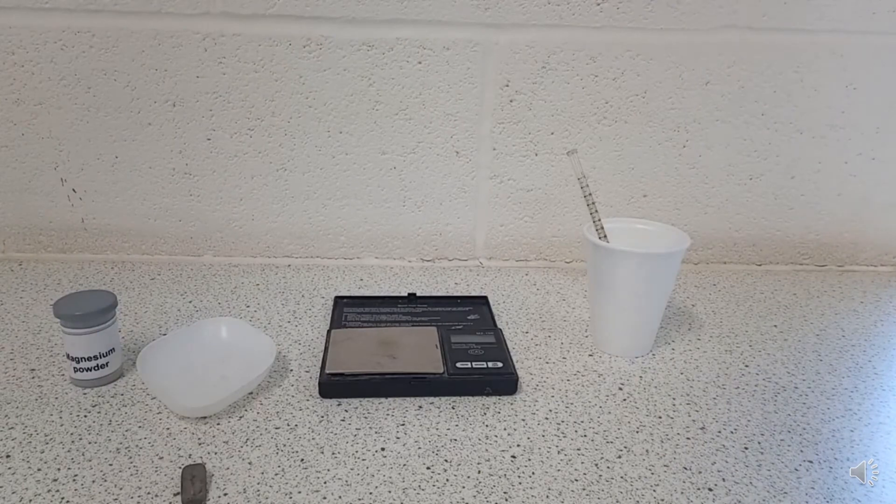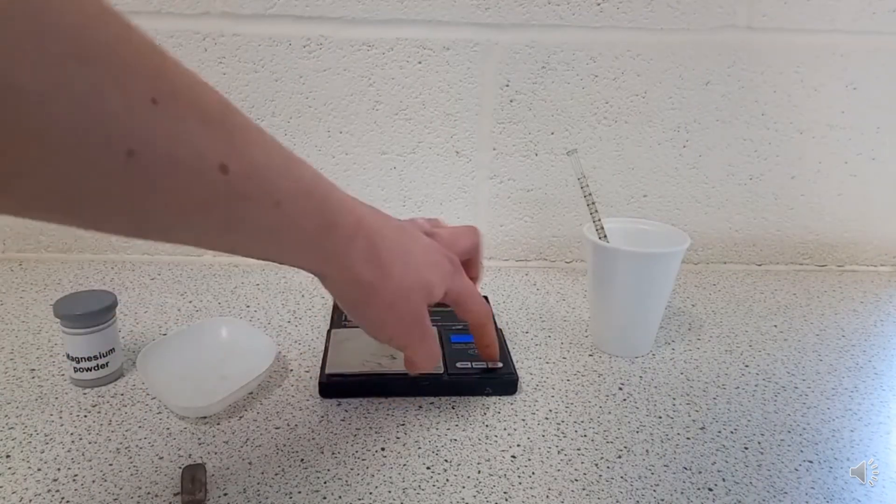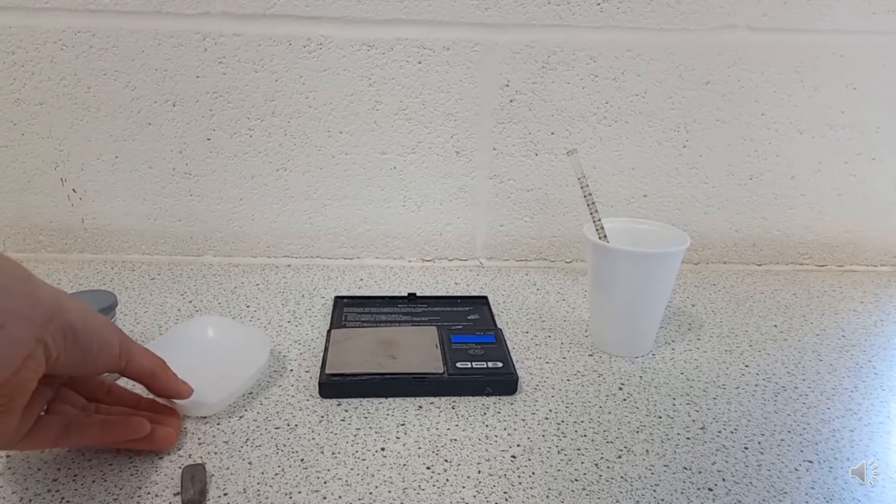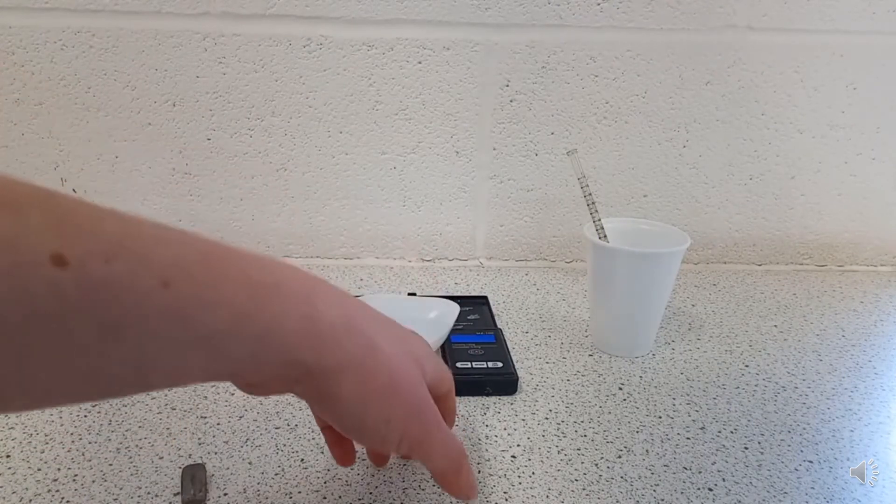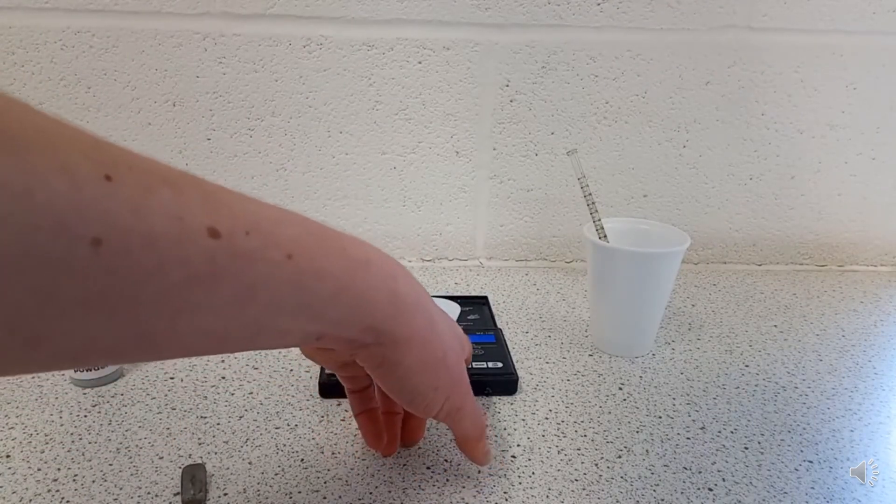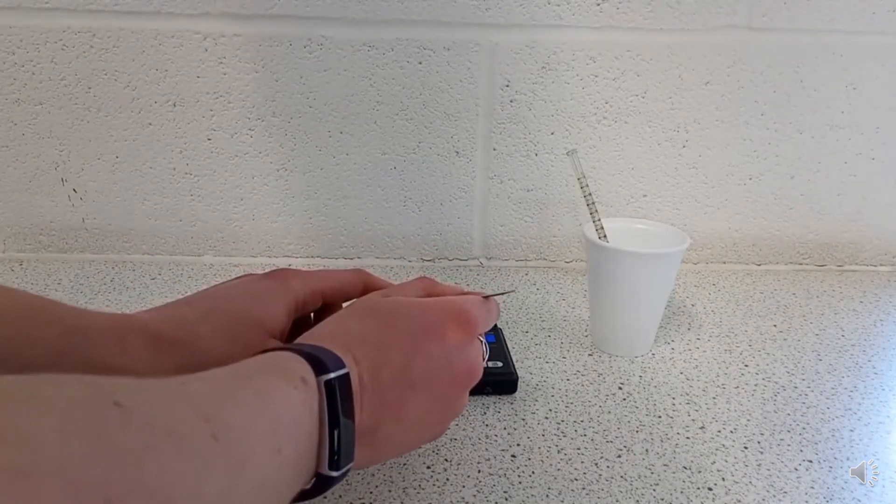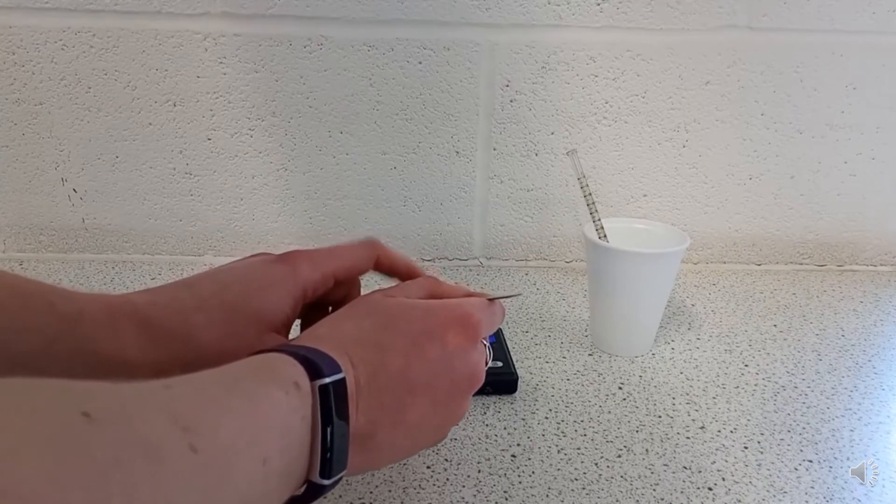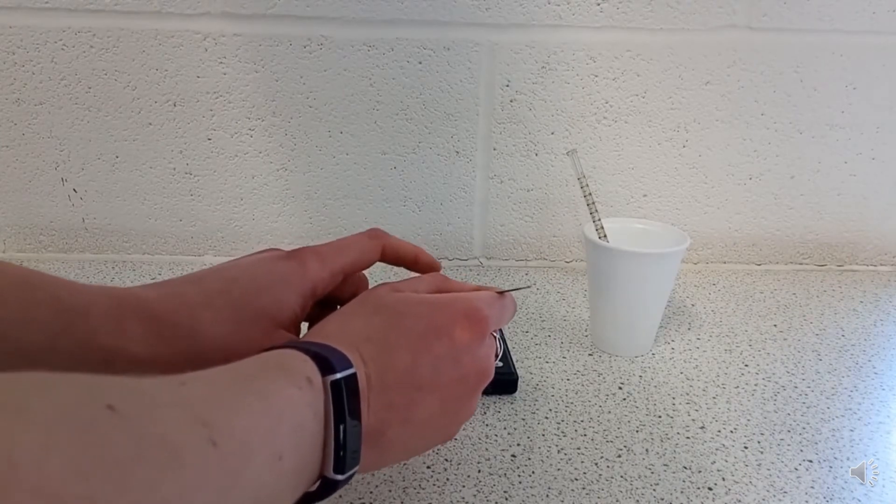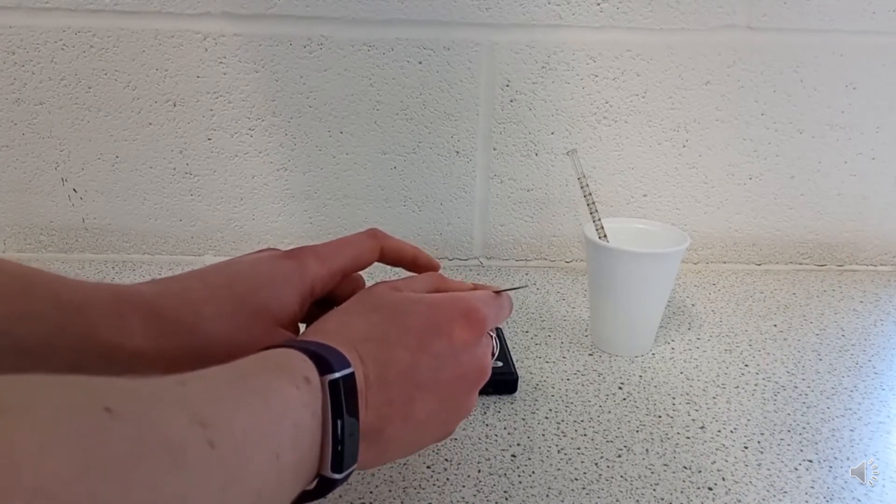Now I'm going to use the balance to calculate the mass of the metal that I'm adding, which here for my first experiment is going to be magnesium. Here I'm adding 0.5 grams. So I use my spatula and gently tap it to add a little bit of magnesium at a time until I've got exactly 0.5 grams.